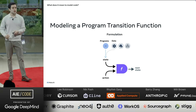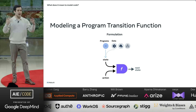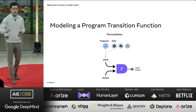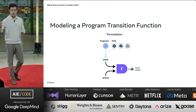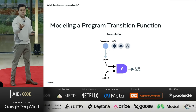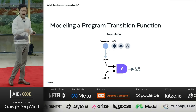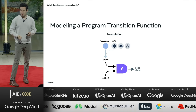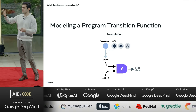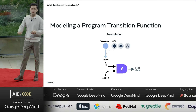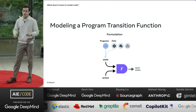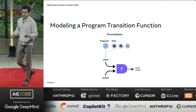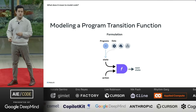What does it actually look like to model that transition function at a high level? We have programs or data — that's some state. We have an action: executing the next line. That results in the next state. Both the program execution and the model's decision-making in an agentic sense can be modeled as a transition function.